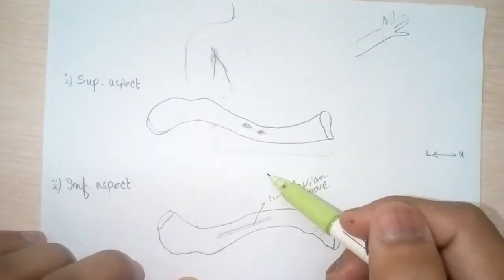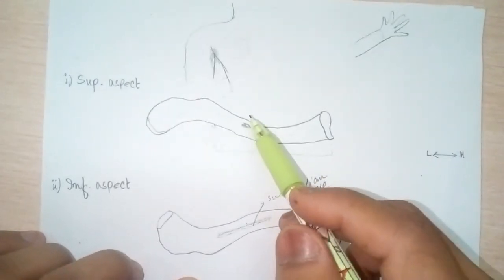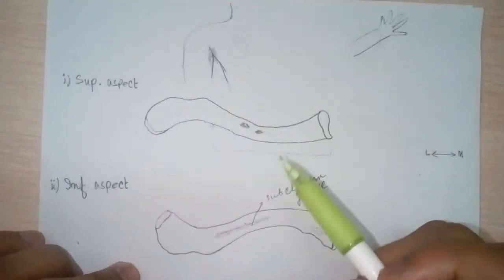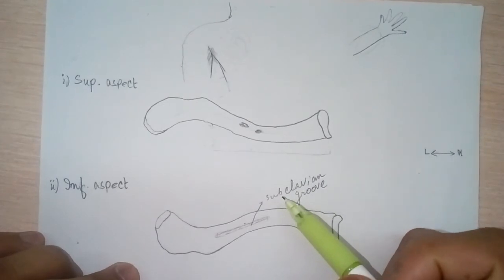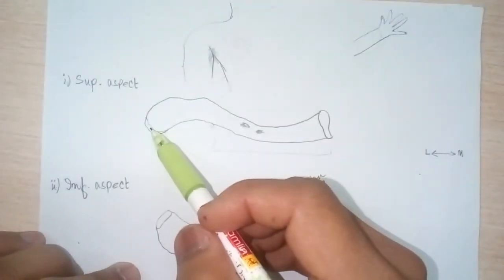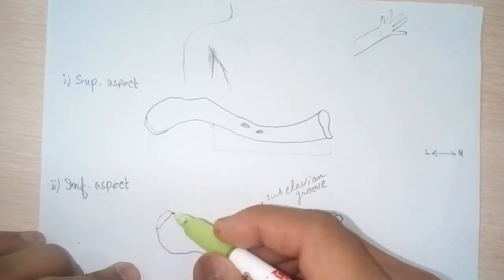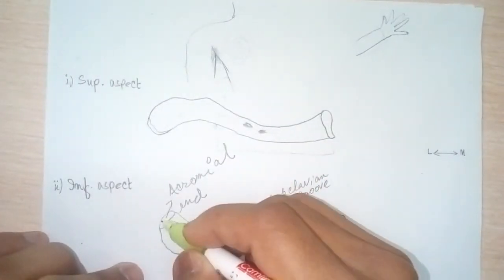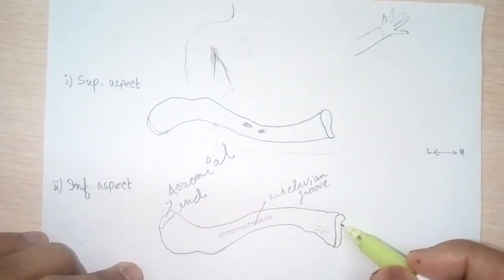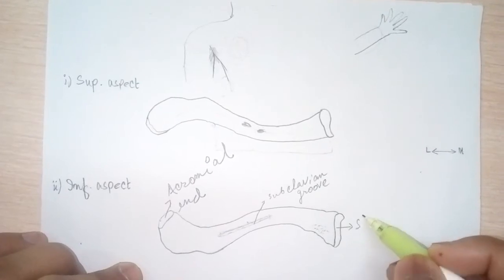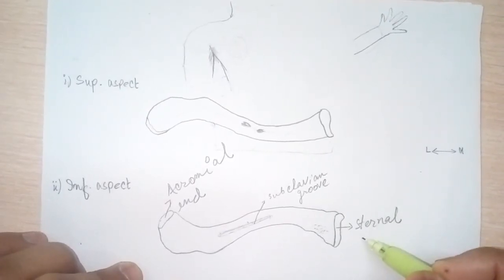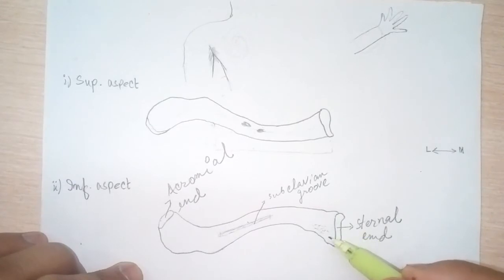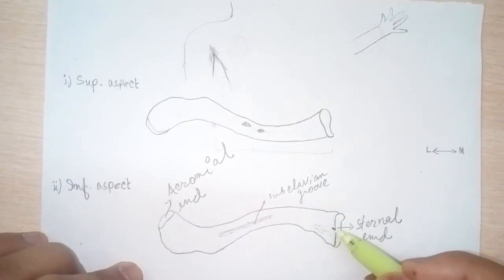The clavicle articulates with the acromion — the highest point of the scapula, the acromion process of the scapula — and forms the acromioclavicular joint. This lateral end is sometimes called the acromial end. The medial end is sometimes called the sternal end, because it articulates with the sternum on the front of the chest, forming the sternoclavicular joint.